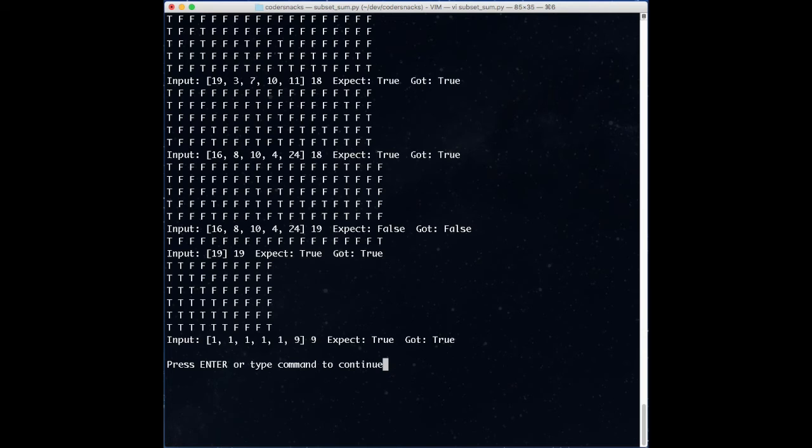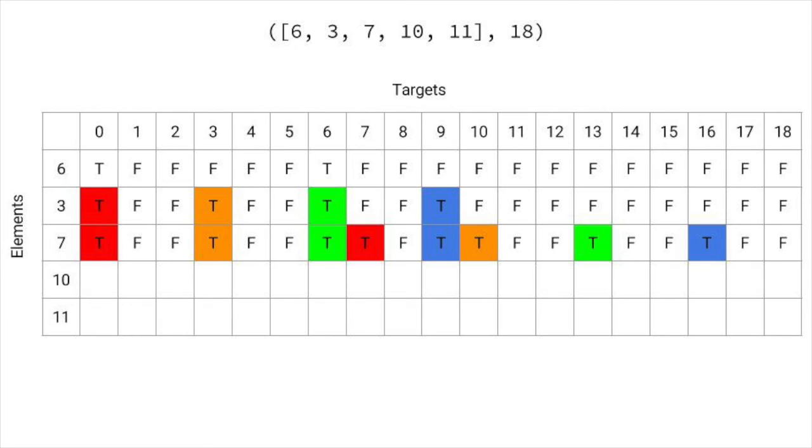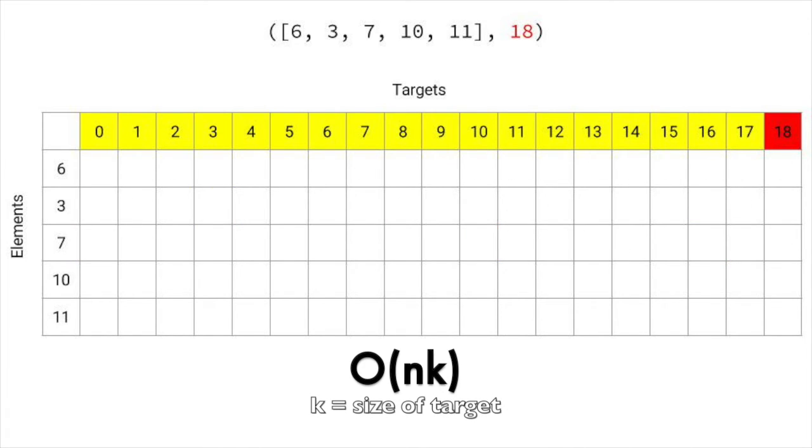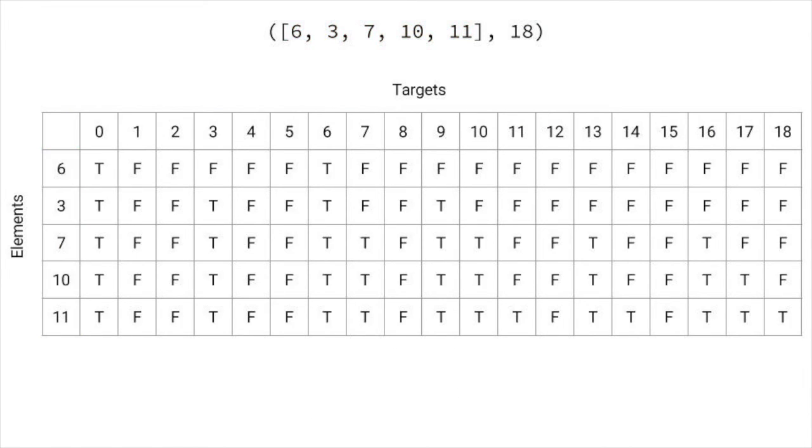So what's our runtime complexity now? It seems like O of 2 to the n, because in each new row we could have twice as many trues to check, but there's a limit, the target size. If everything is already true, all we do is set everything in the next row to true. The complexity is O of n times k, where k is the size of the target and n is the number of elements. Another way to see this is we do constant work to fill each cell of the table, so the runtime is O of the table size.